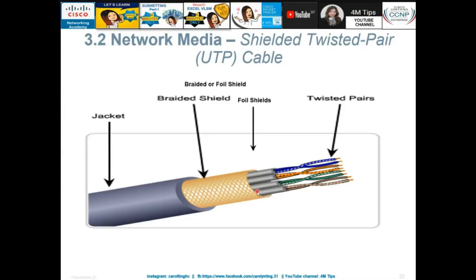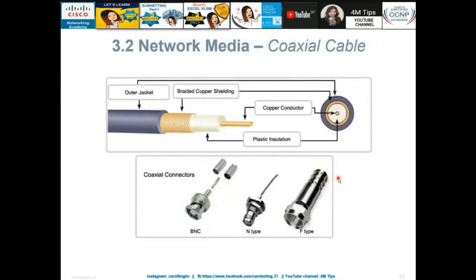For coaxial cable — like television cables — there are many layers of protection: an outer jacket, a braided shield, and a foil shield. These layers exist to protect the transmission inside from noise interference, because cable is sensitive to noise which can cause signal distortion.